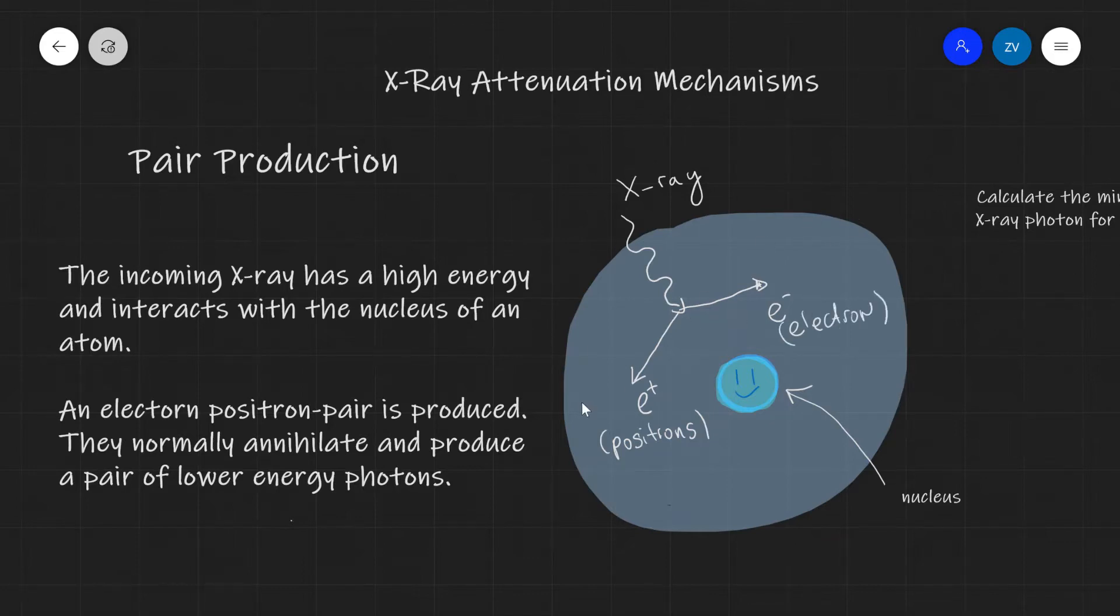Now normally those two particles are going to annihilate each other immediately after they have been produced or very shortly afterwards. And they will produce a pair of lower energy photons that your detector in the lab, for instance, can detect. So this is one of the most common ways of actually identifying the types of radiation that have struck or have been emitted from a radioactive substance, for instance, which has many interesting applications.